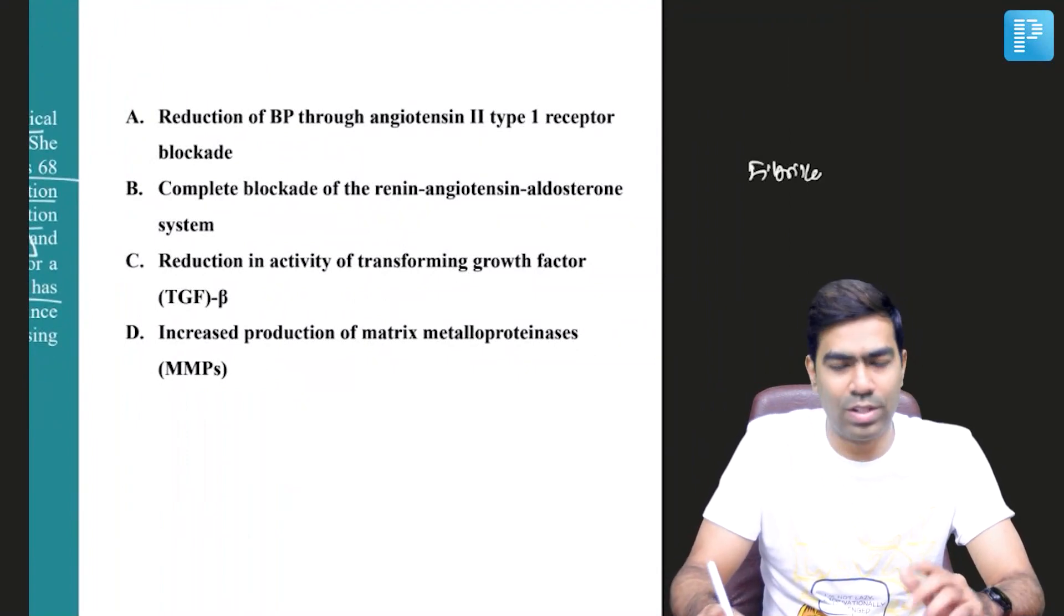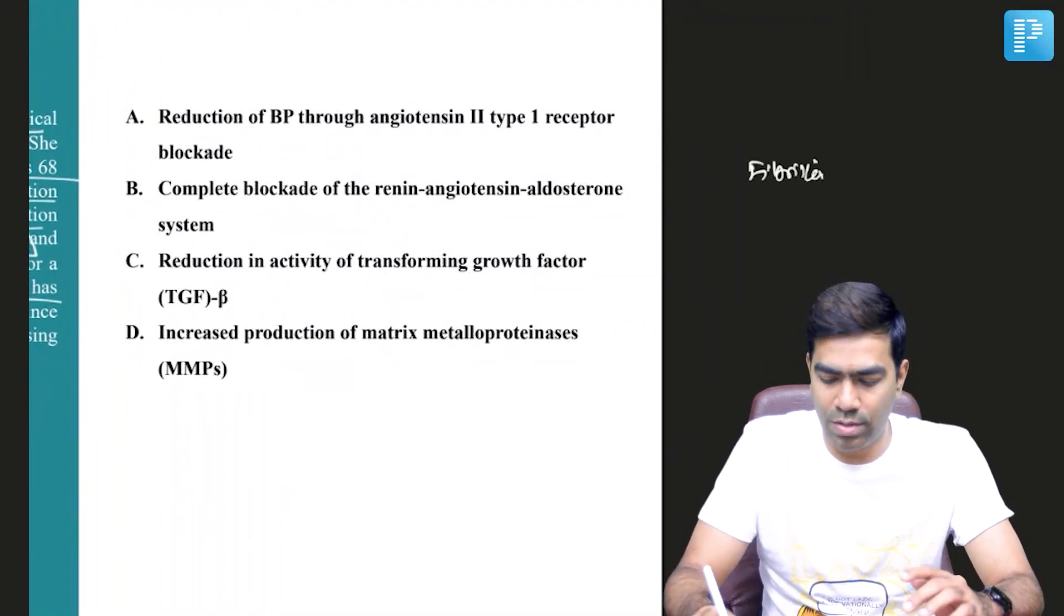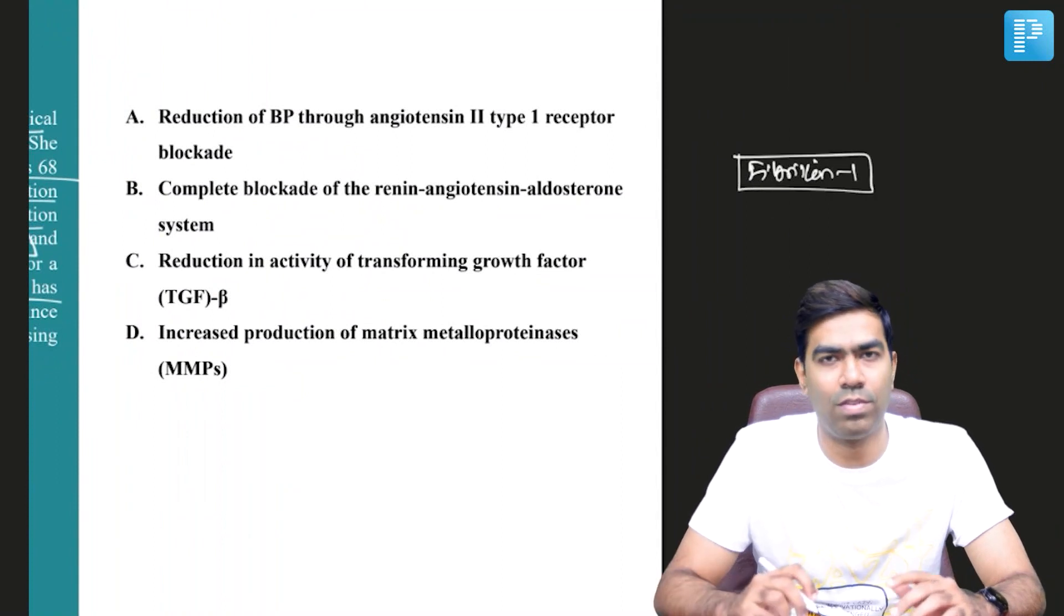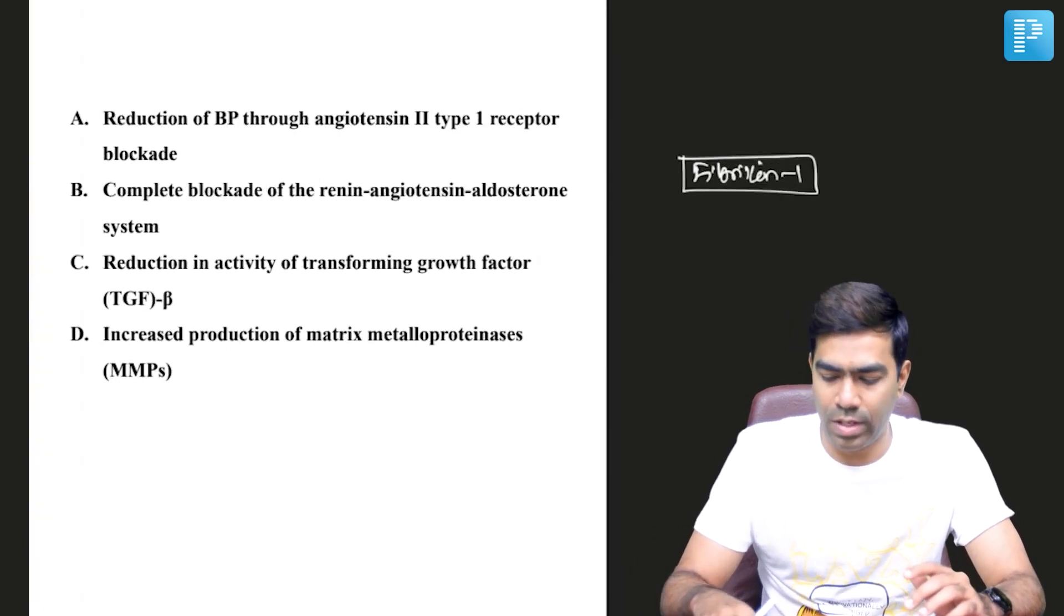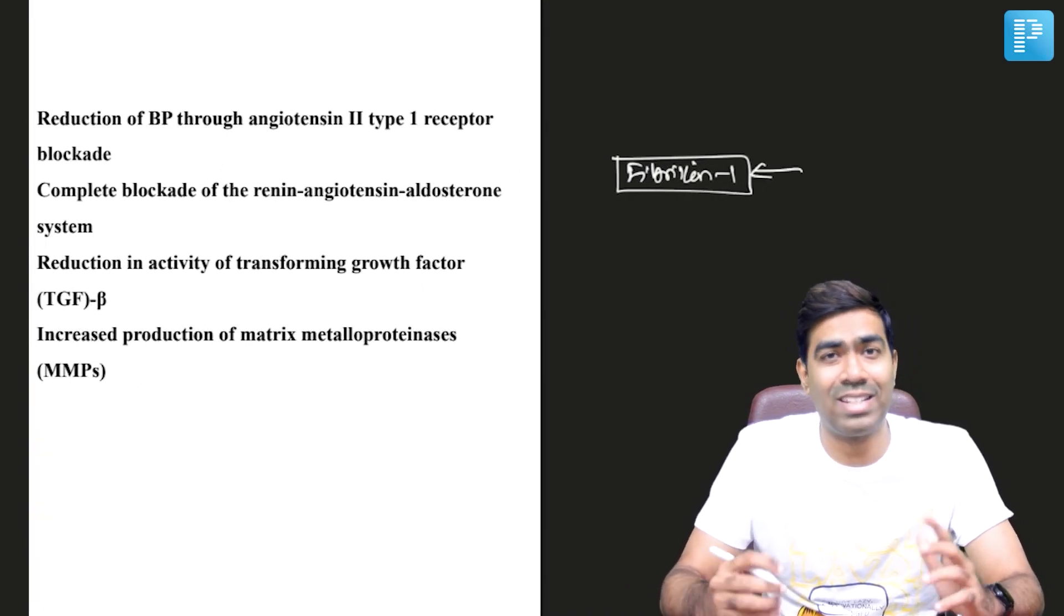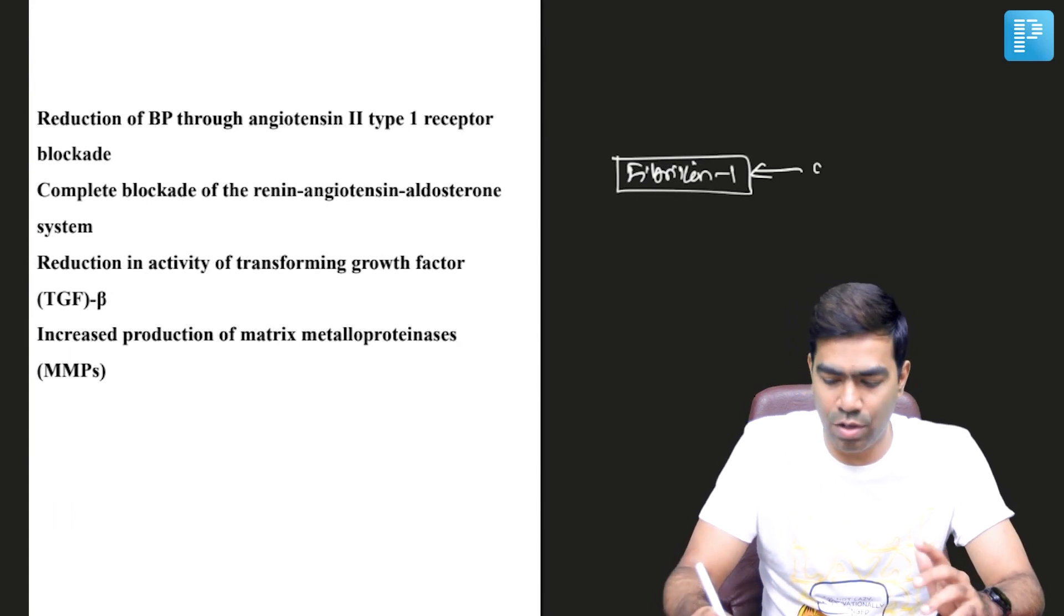The problem in Marfan syndrome is fibrillin-1 gene mutation, inherited in autosomal dominant fashion with variable penetrance. Fibrillin-1 acts as a scaffold for attachment of elastin. If there is a fibrillin-1 gene mutation, you're not going to have proper elastin attachment.